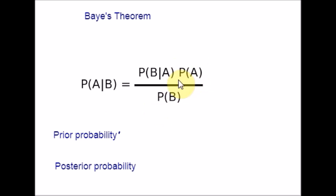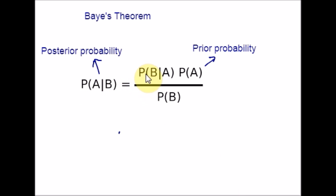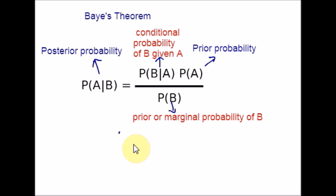Probability of A is called the prior probability, or the marginal probability of A. It is prior in the sense that it does not take into account any information about B. Probability of A given B is the posterior probability because it is derived from, or depends upon, the specific value of B. Probability of B given A is the conditional probability of B given A. Probability of B in the denominator is the prior or marginal probability of B, and this acts as a normalizing constant.